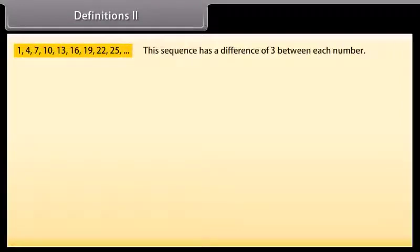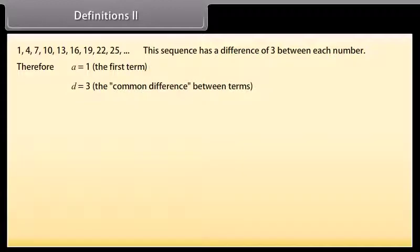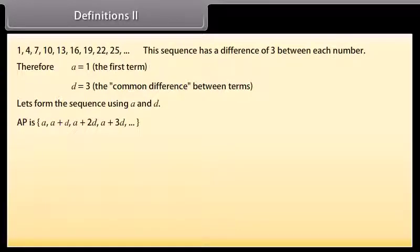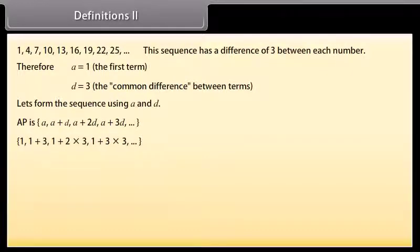Look at this example. We can see that this sequence has a difference of three between each number. Therefore, a is equal to 1 (the first term) and d is equal to 3 (the common difference). Substituting the values of a and d into the AP formula, we get: 1, 1 plus 3, 1 plus 2 times 3, 1 plus 3 times 3, and so on.